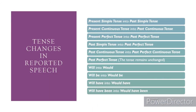Here are the tense changes in reported speech. The simple present tense changes into simple past tense. The simple past tense changes into past perfect tense. The past continuous tense changes into past perfect continuous tense. The past perfect tense in direct speech does not change — the tense remains unchanged.